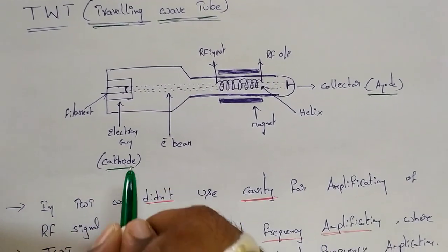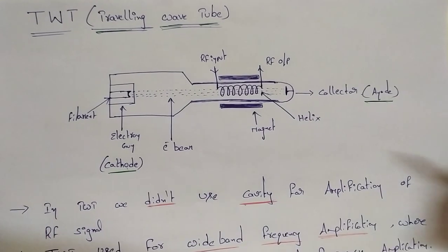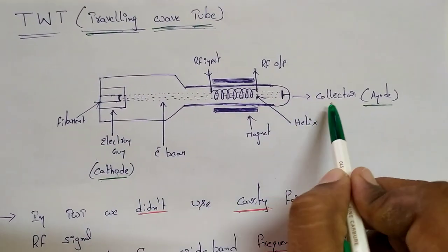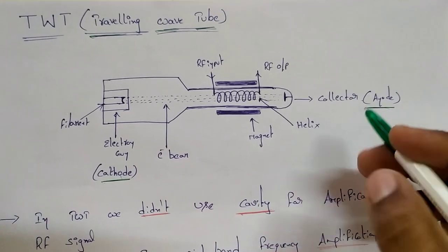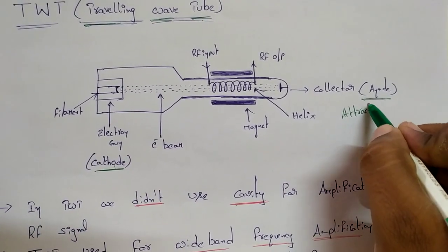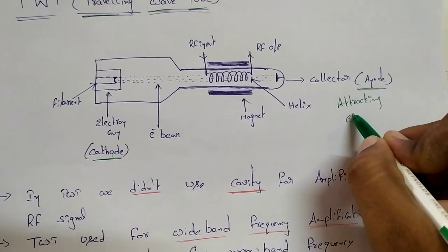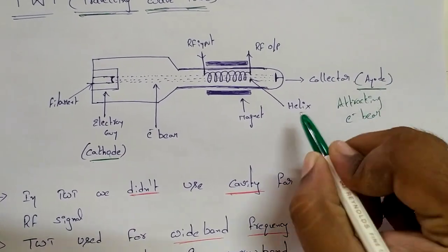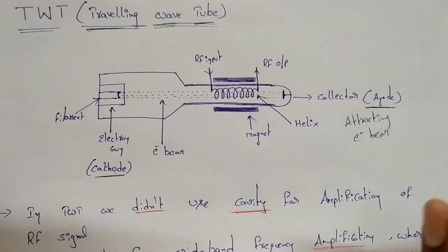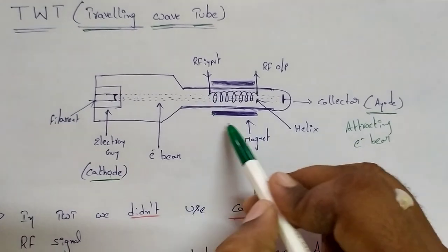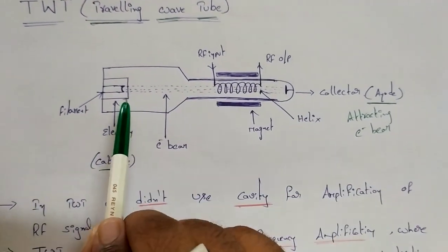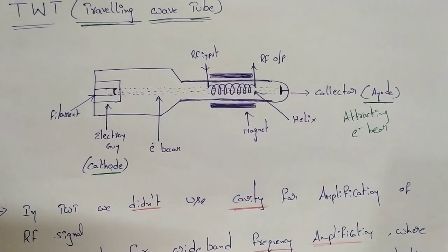The collector is also named the anode. The cathode is the source — it is negatively charged. The anode will attract the electrons. We can place a collector by the operator; this collector attracts the electron beam. We have to collect the electron.